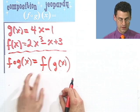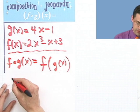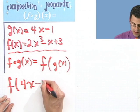You see, I first do the g and then I do the f. And the g is 4x minus 1. So I see f of 4x minus 1.